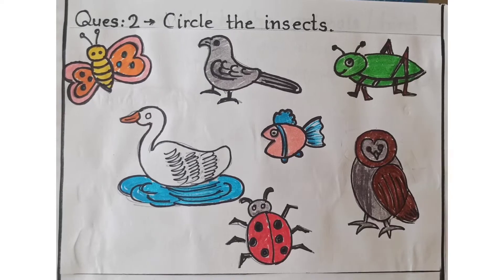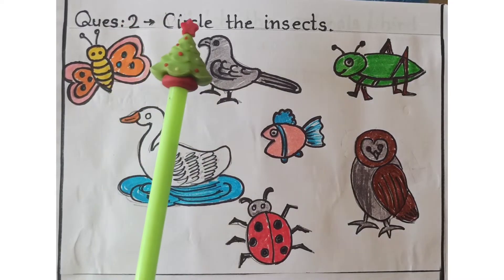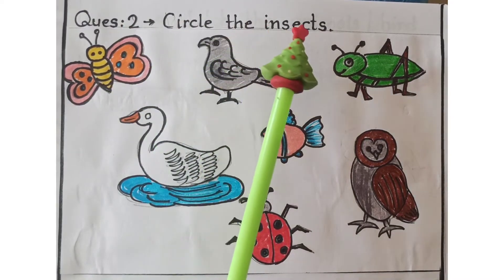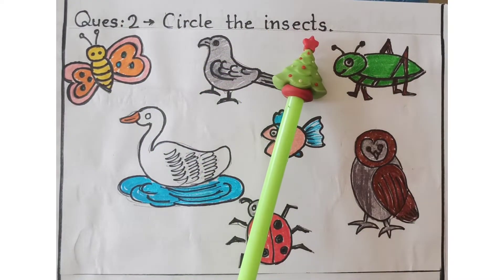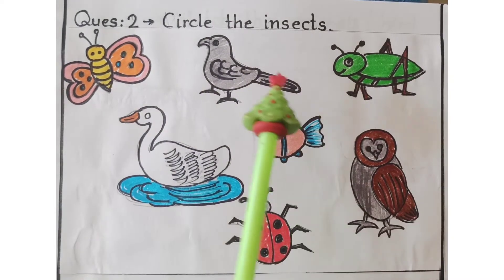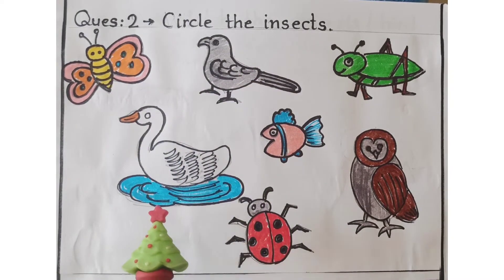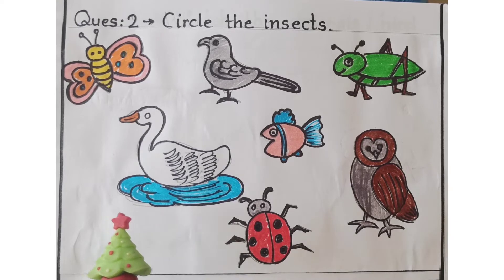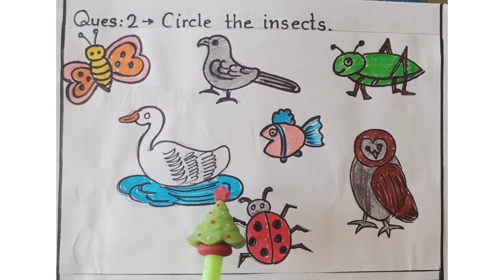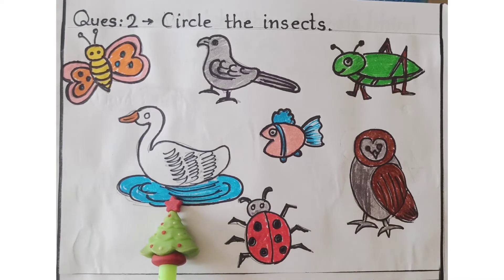Next is question number 2: Circle the insects. Here I have drawn some pictures of birds as well as insects. Among all these pictures, you have to identify the pictures of insects and you have to circle them.